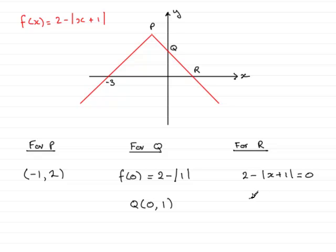So that would mean that 2 would equal the mod of x plus 1. Now for this to equal 2, x plus 1 would have to equal 2. And you can see, just by looking at it, that x would have to be 1. 1 plus 1 is 2, the mod of 2 is 2. So x is 1. And that means that the coordinates of r will be 1, 0.